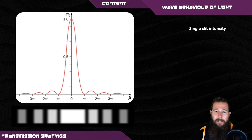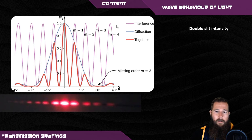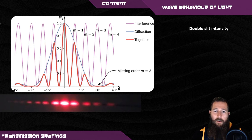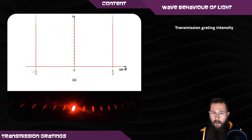Looking at other scenarios for intensity of light undergoing diffraction: in a single slit scenario, the central maximum is really bright while the first and second order maxima are a lot less intense. For a double slit scenario, the central order maximum is bright and the first order maximum is also very bright, then it dies down quickly. In this graph, the light purple lines represent the areas of interference with constructive and destructive interference, the blue line is the intensity of the diffraction in double slit, and the red line is the actual result.